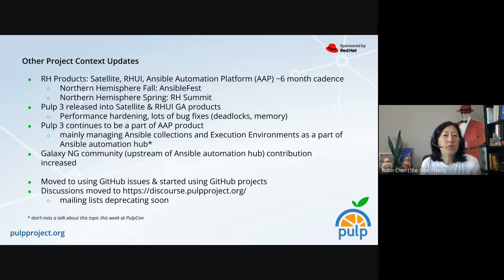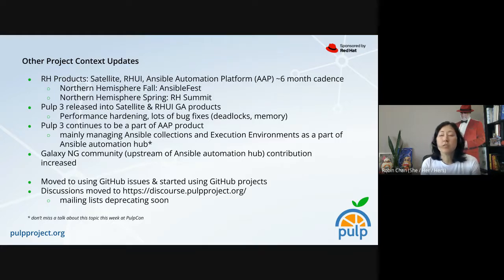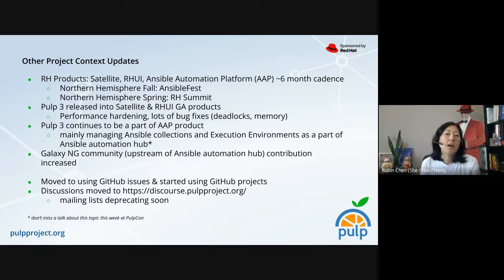We also know that Pulp 3 has gone GA in the Satellite and Rui products in 2022, which has meant that we've had a lot of performance hardening, a lot of bug fixes around deadlocks and memory. If you're concerned about Pulp 3, we already know it's been used in production upstream and in lots of community environments, and it is also in Satellite and Rui Red Hat products in production. So rest easy that a lot of issues have been found and addressed because of those releases.